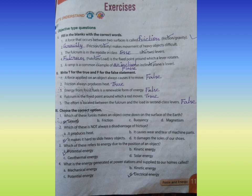Roman numeral two, write T for true and F for false statements. Number one: A force applied on an object always causes it to move. False. Number two: Friction always produces heat. True.